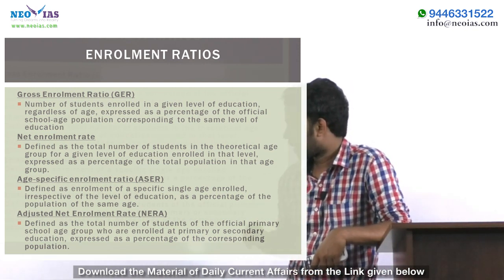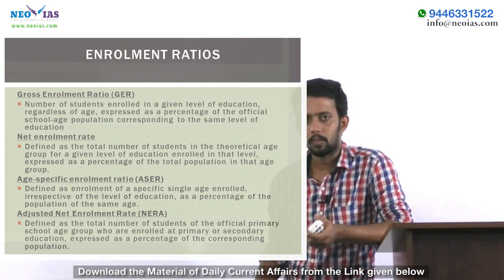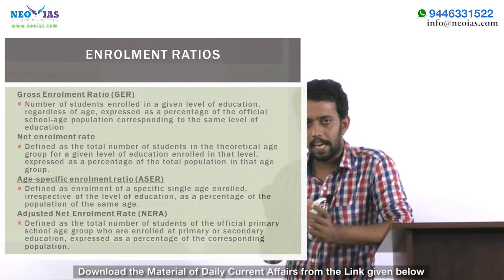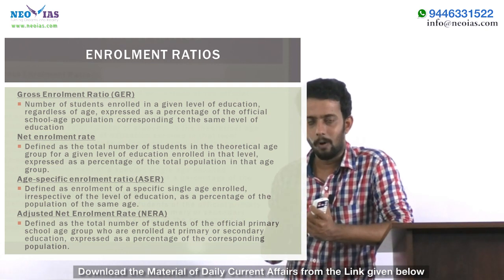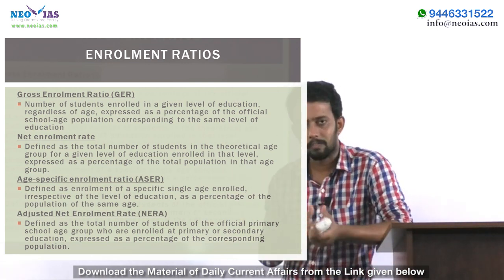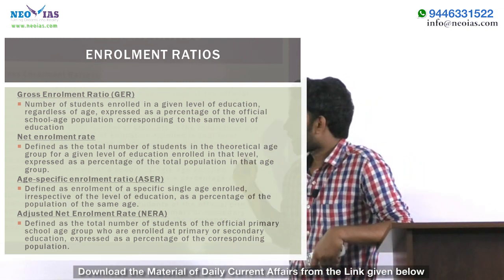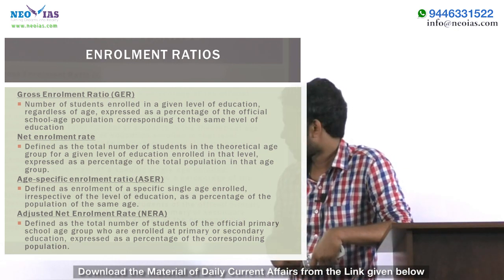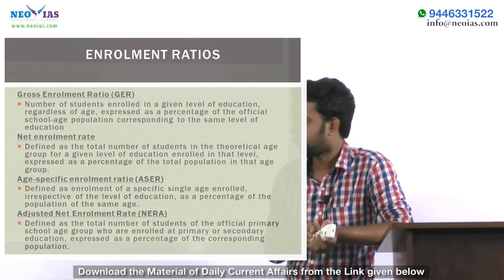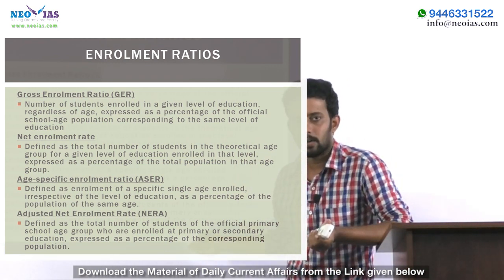In the case of NERA, or Adjusted Net Enrollment Rate, it is the total number of students out of a locality enrolled in a particular school. Here we do not take into account which level they are in — the only consideration is the primary age group. Suppose the primary age group is between six and fourteen; out of those students in the village, how many are enrolled in school — that's what NERA measures. In summary: GER takes level but not age; NER takes both age and level; ASER takes age but not level; NERA uses a broader age group and counts school enrollment only.